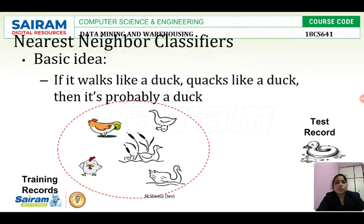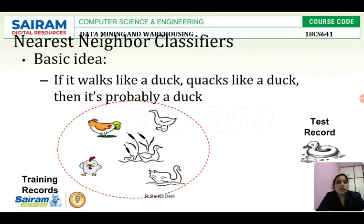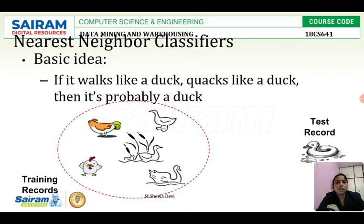The basic idea is: if it walks like a duck and quacks like a duck, then its probability is a duck. So if a bird satisfies two conditions — it walks like a duck and quacks like a duck — then the probability of the bird being a duck is more, and I will classify that bird as a duck. For example, if the distance between the two legs is 10 centimeters and the sound is the same duck sound, then we will classify that bird as a duck. With this concept we are going to classify in the nearest neighbor.